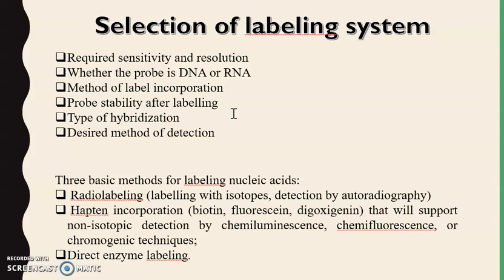The desired method of detection — whether radiographic or chromatographic such as chemiluminescence — also influences probe and labeling selection. The three basic methods for labeling nucleic acids are: first, radio labeling using isotopes detected through autoradiography; second, hapten incorporation, where hapten is a small molecule that can elicit immunogenic responses — hapten molecules include biotin, digoxigenin — supporting non-isotopic detection by chemiluminescence, chemifluorescence, or chromogenic techniques; and third, direct enzyme labeling.